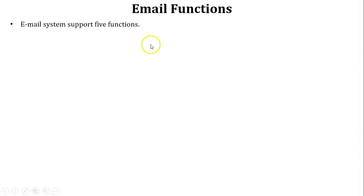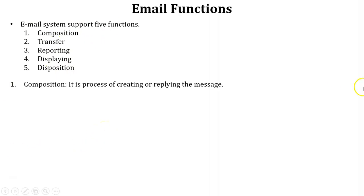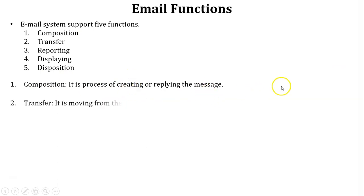Each email system supports five functions. The first is composition: using the composition function we can create and reply to messages. The second is transfer: the purpose of the transfer function is moving a mail from sender to receiver.